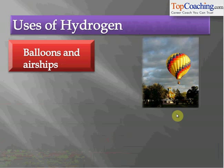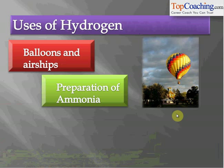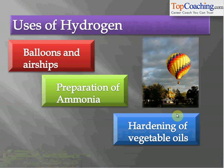However, hydrogen is highly inflammable and catches fire easily, so nowadays balloons and airships use helium gas, which is unreactive, instead of hydrogen. Hydrogen is also used in the preparation of ammonia in the Haber's process, and in the hardening of vegetable oils.